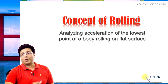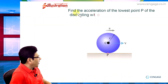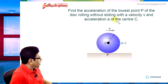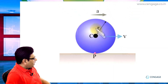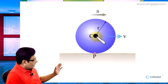Let us move to the illustration part. In this illustration, it is given: find the acceleration of the lowest point P of the disk rolling without sliding with velocity v, and the acceleration a of centre C. You can observe this disk has radius r, and it is moving with constant acceleration a, with velocity v at the time of observation.